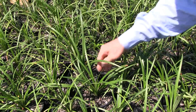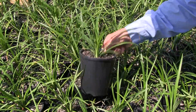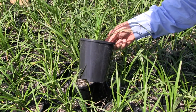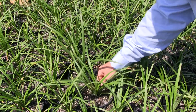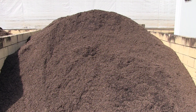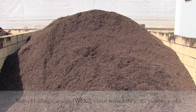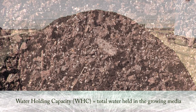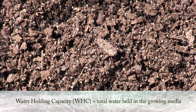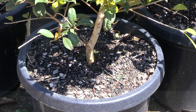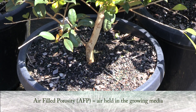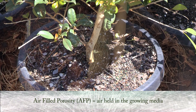An effective irrigation schedule identifies the optimum growing media moisture content, the amount of water to apply and when to apply the irrigation. The characteristics of growing media affect the amount of water available to the plant. The volume of water retained in a growing media depends on the range of particle sizes, which also influences the amount of air held in the media.